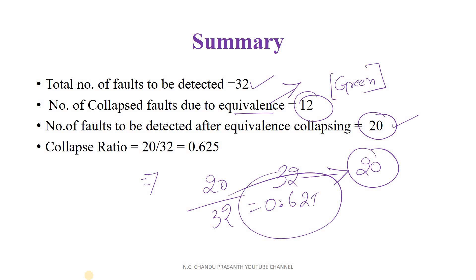In this way, we can reduce the number of test vectors and the number of faults. Fault Equivalence concept can reduce the number of faults, and fewer faults means fewer test vectors are needed to test a particular circuit. It's a simple concept. Thank you.